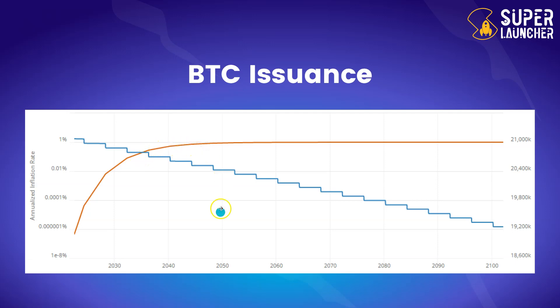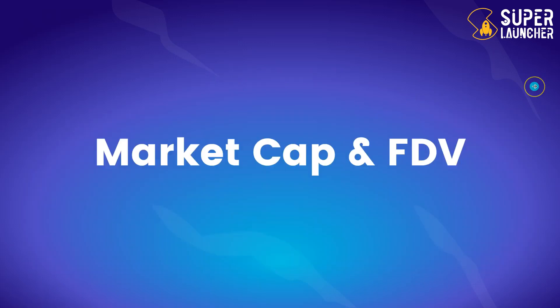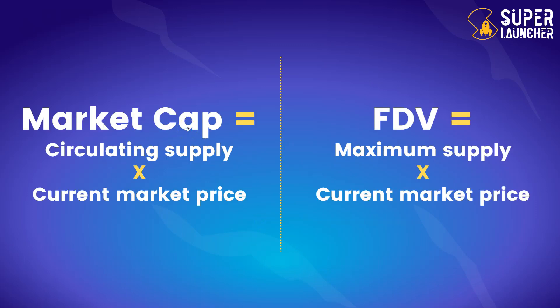Around 2050, Bitcoin's circulating supply will be very close to its maximum of 21 million tokens. Let's now talk about market cap and FDV. FDV stands for fully diluted value. The market cap equals the circulating supply times the current market price. The FDV equals the maximum supply times the current market price. The FDV is used to evaluate a project, but you must note that it does not take inflation into account.